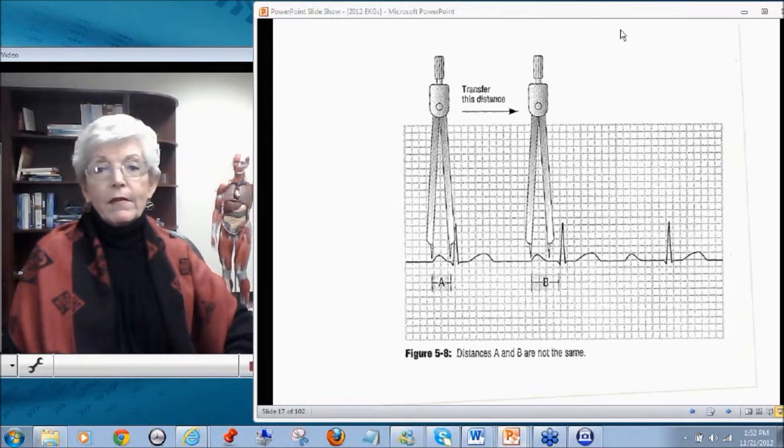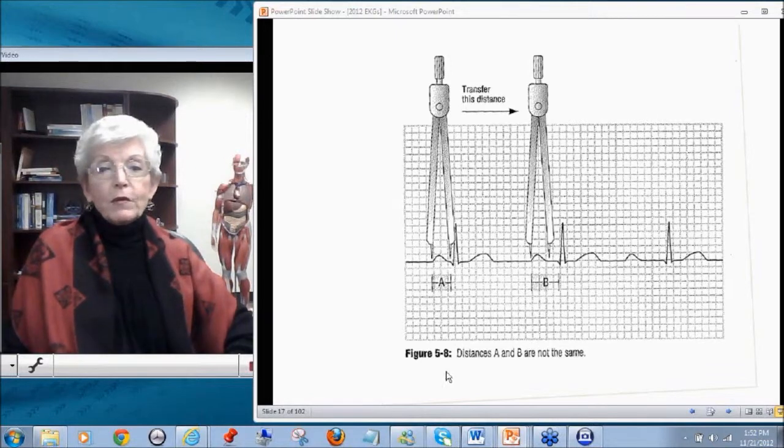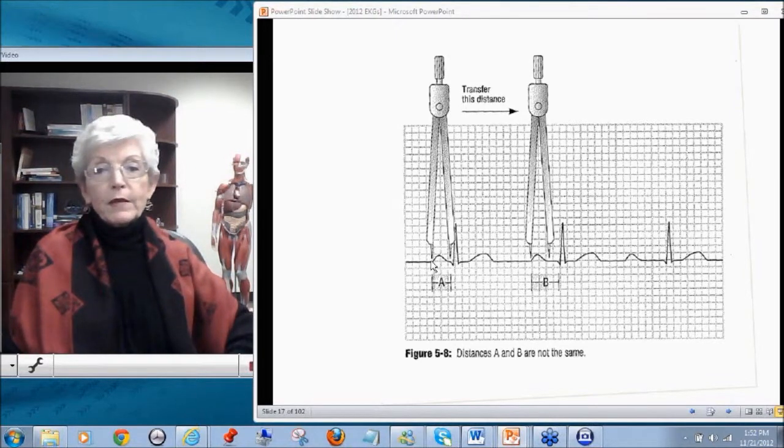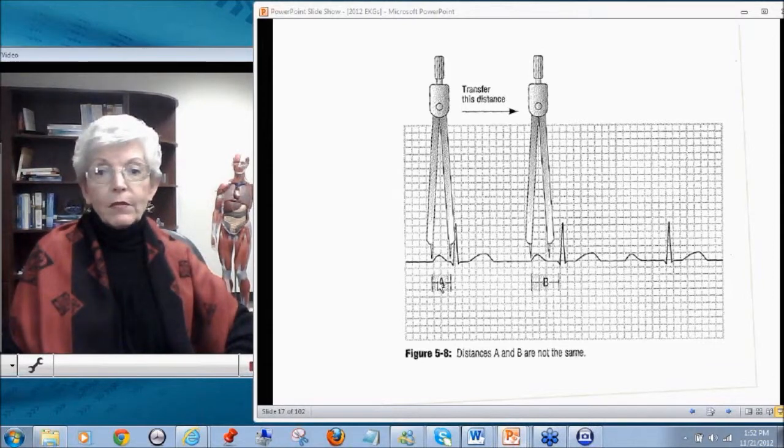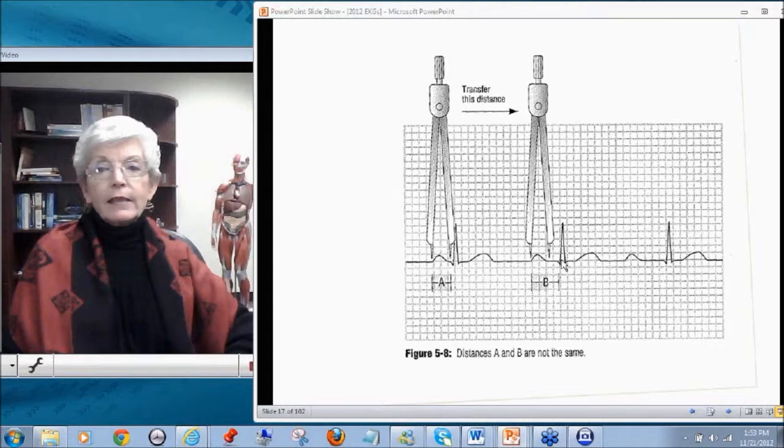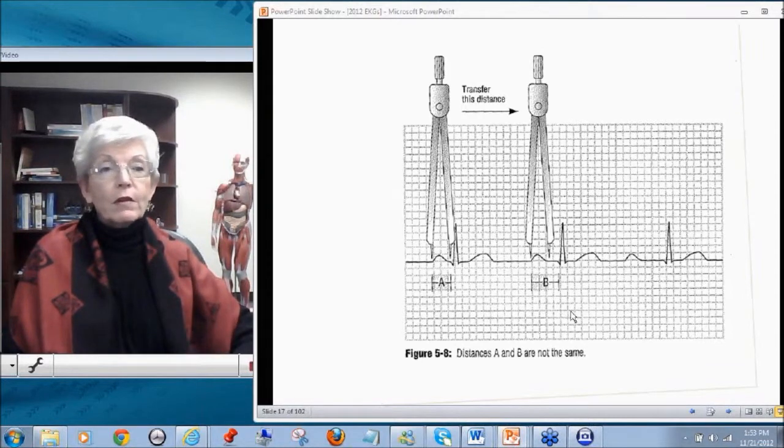This is showing that when doing this, if you look at the measurement at the PR interval of this beat, this one is this big, which is about three little boxes, two and a half little boxes, and taking that same caliper, and if you move it to the next beat, you'll see that it didn't get as far, that this PR interval is shorter than this PR interval. They're not identical, so this would not match, they're not the same.